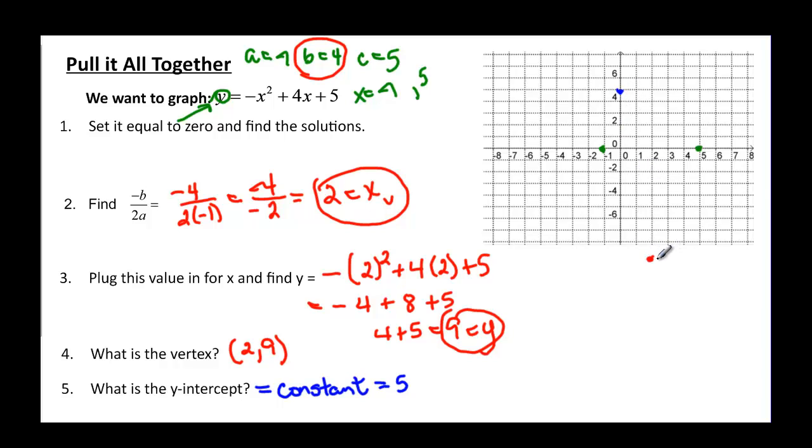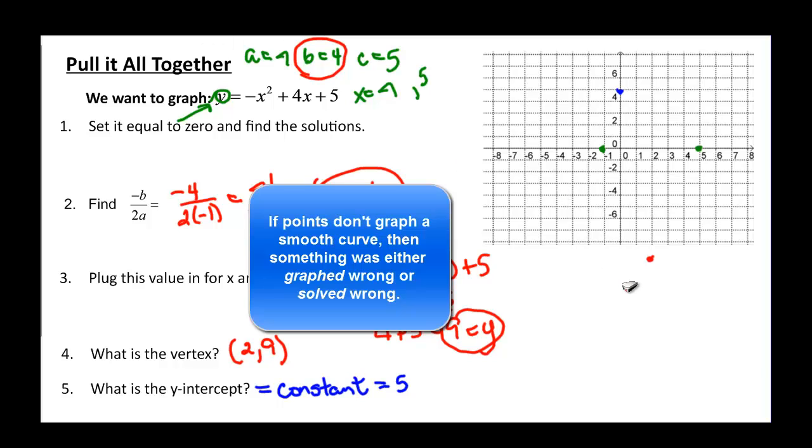Oh, I did 2, 9 and it should be 2, negative 9. See how nice it is, though? I knew something was wrong because those weren't all going to go the right way. So, 2, 9, somewhere up here. And now, when I look at my points, I'm going to be able to go to this one and go to that one and then back down to this one. And now we've graphed a quadratic.